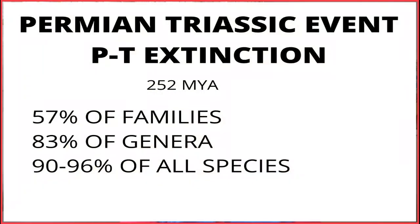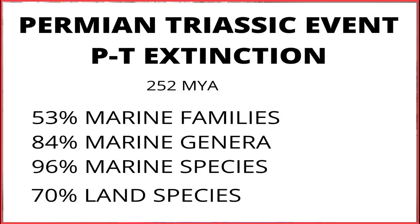The cycle starts again. Life that survived is again trying to move on to a new normal, using the opportunity to evolve into amphibians and reptiles, but along comes the greatest mass extinction in Earth's history, around 252 million years ago. The Permian-Triassic event, or the P-T extinction, killed 57% of all families, 83% of all genera, and 90 to 96% of all species. This included 53% of marine genera, about 96% of all marine species, and an estimated 70% of land species, including insects.